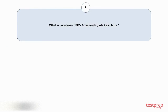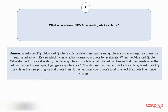Question number four: What is Salesforce CPQ's advanced quote calculator? Salesforce CPQ's advanced quote calculator determines quote and quote line prices in response to user or automated actions. Review which types of actions cause your quote to recalculate. When the advanced quote calculator performs a calculation, it updates quote and quote line fields based on changes that users made after the last calculation.